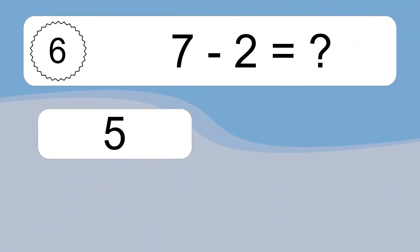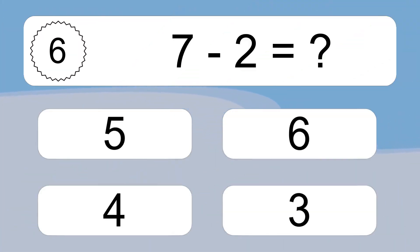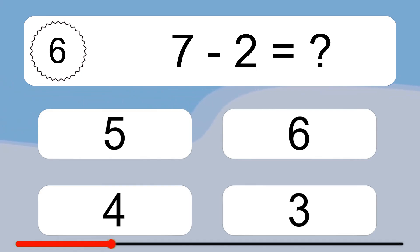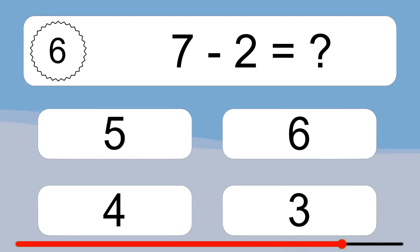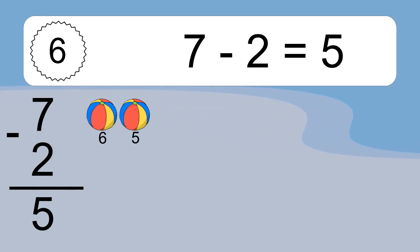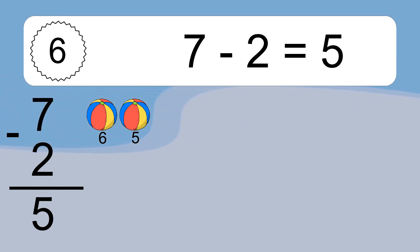7 minus 2 equals what? 7 minus 2 equals 5. Let's count it: 6, 5.